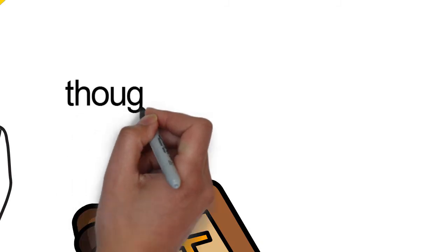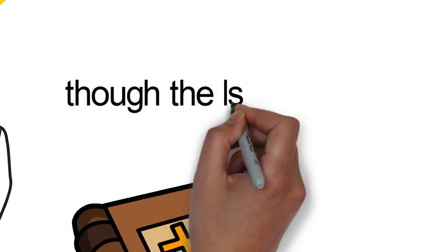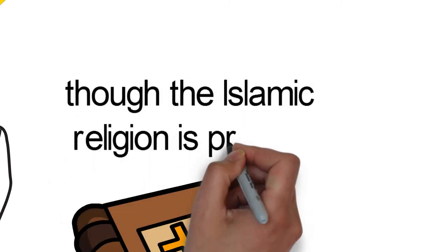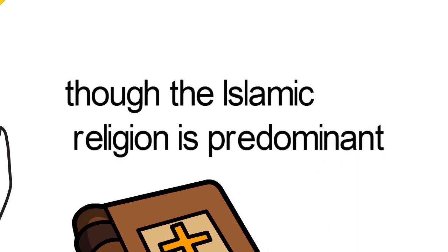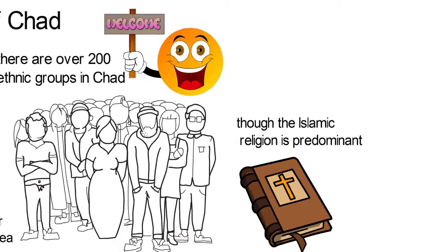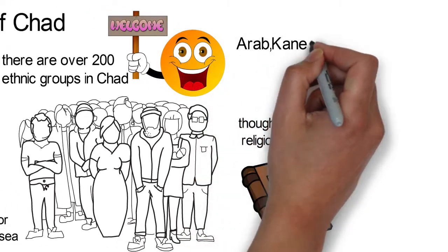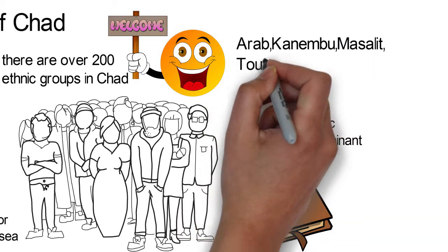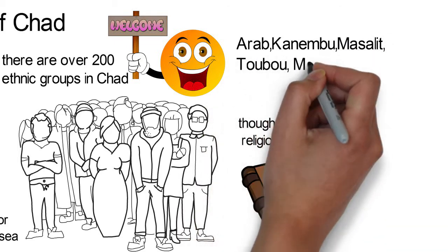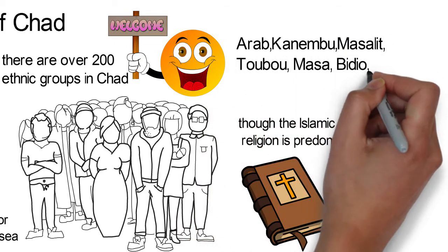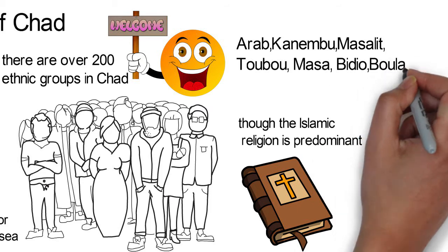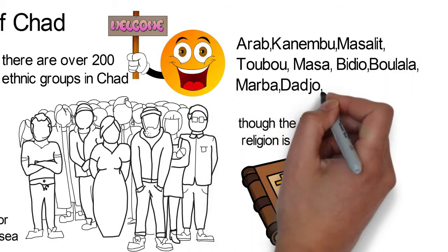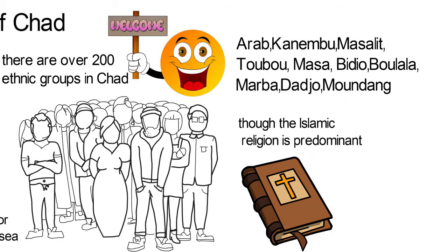Islam and Christianity are the main religions practiced by the Chadians, though the Islamic religion is predominant. Some of the ethnic groups include Arab, Kanembu, Masalit, Tubu, Masa, Bidyo, Bulala, Marba, Dajo, and Mundang.